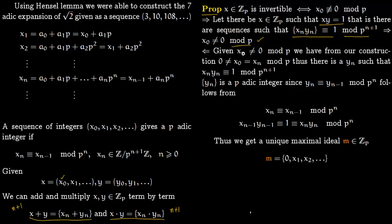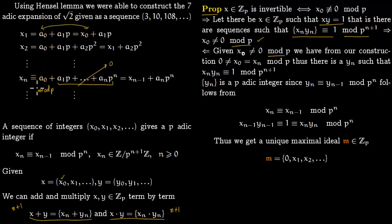In the opposite direction, we are given that x₀ is not zero modulo p. From our construction, xₙ is also not congruent to zero modulo p, since doing modulo p sends all higher terms to zero, leaving xₙ ≡ a₀ = x₀ modulo p. Since we work in ℤ/pⁿ⁺¹ℤ where p is prime, if xₙ is not zero there exists an inverse yₙ such that xₙ·yₙ ≡ 1 (mod pⁿ⁺¹). This holds for all n.